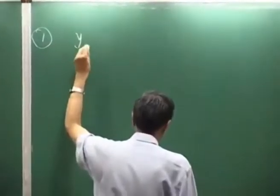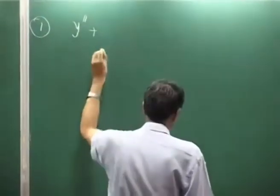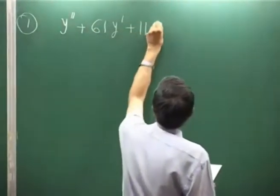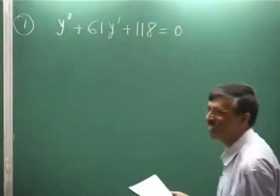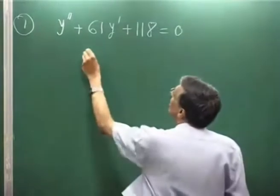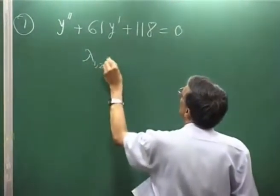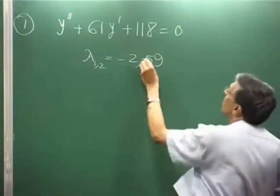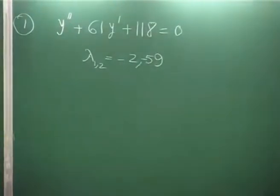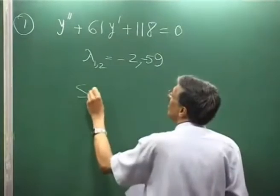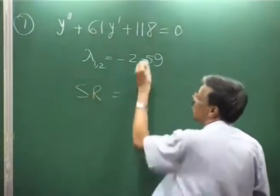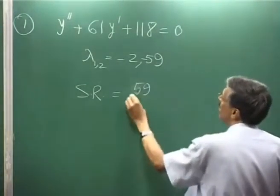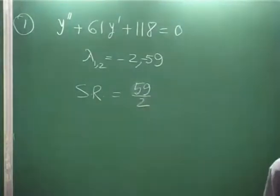All of you have understood that the second equation is the stiff equation. This is such a synthetic problem — you can make out that the eigenvalues are minus 2 and minus 59. So how do you define the stiffness ratio? It is just the ratio of the two eigenvalues: the maximum by the minimum. That is why you say this is a stiff equation.